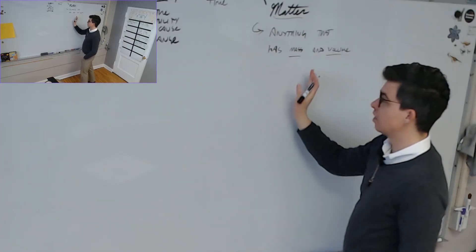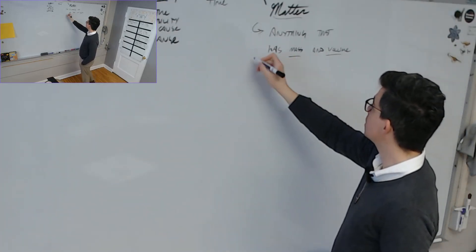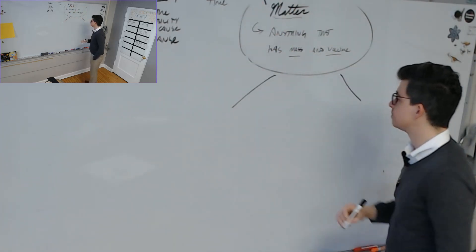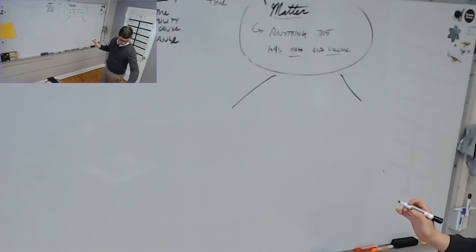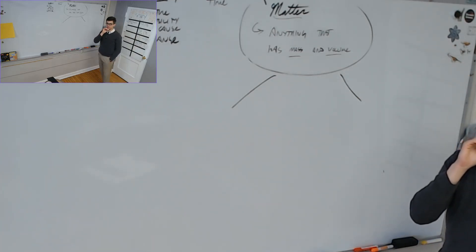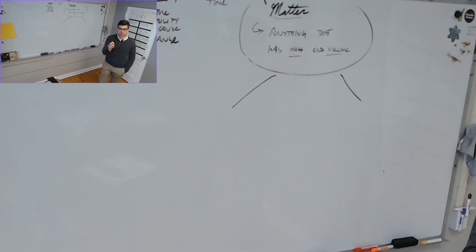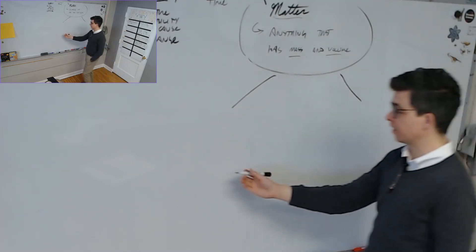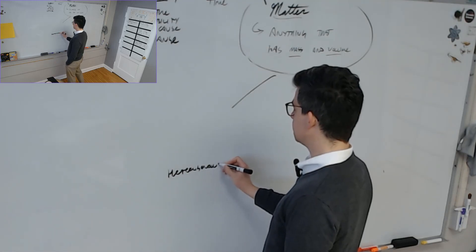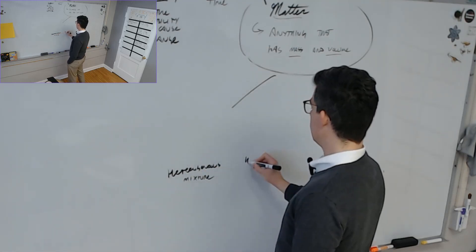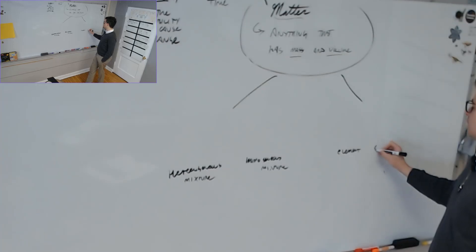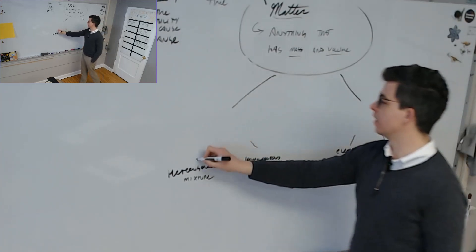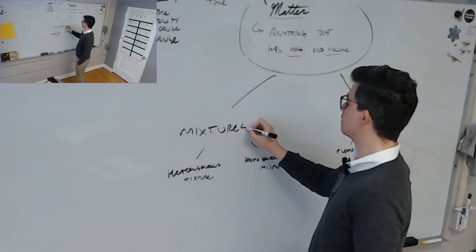Within the realm of matter, there are different kinds of matter. Matter can be divided broadly into mixtures and pure substances - sometimes we specify pure substances. Pure means unmixed - like a purebred animal is unmixed. If that animal has offspring with another breed, those offspring are mixtures in a sense. These are the categories of matter.